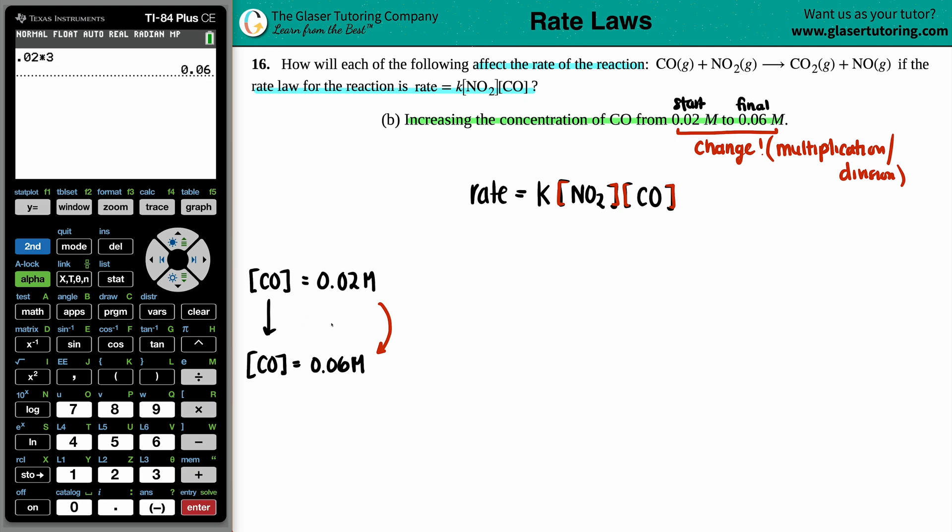You could figure out the factor by doing 0.06 divided by 0.02, and that will get you how much it was changed by. So if I started off with 0.02, I'm increasing by three times the amount. This is the same thing as saying that you tripled your molarity, or you increased it by three times, or you went up by threefold. All of these wordings mean the same exact thing.